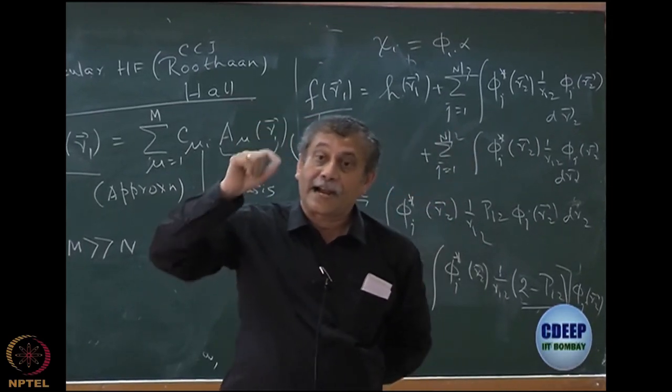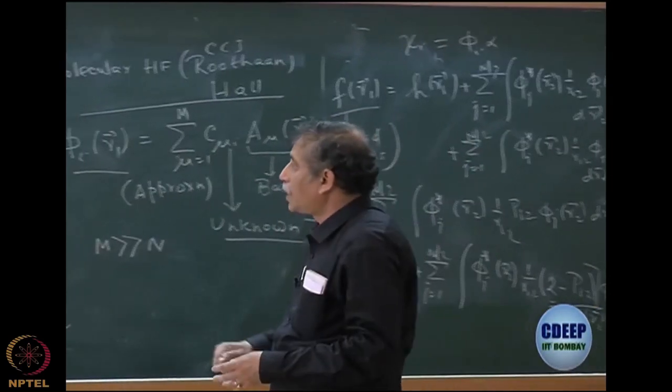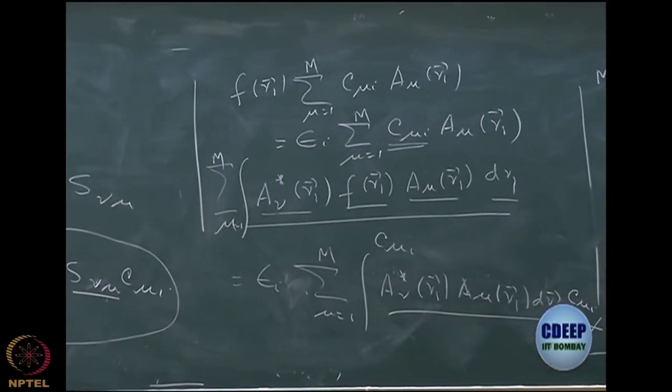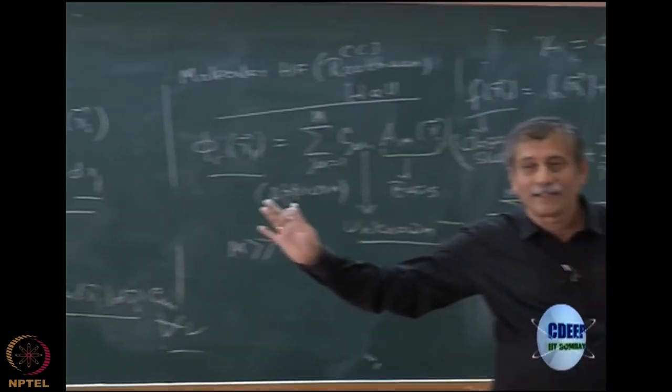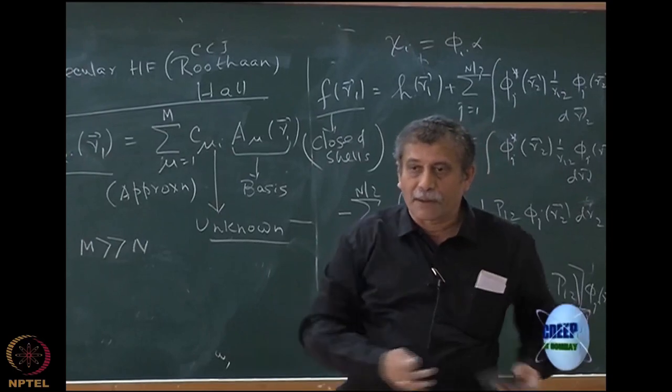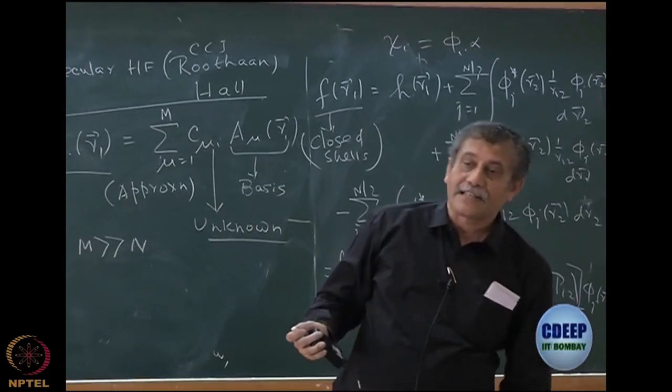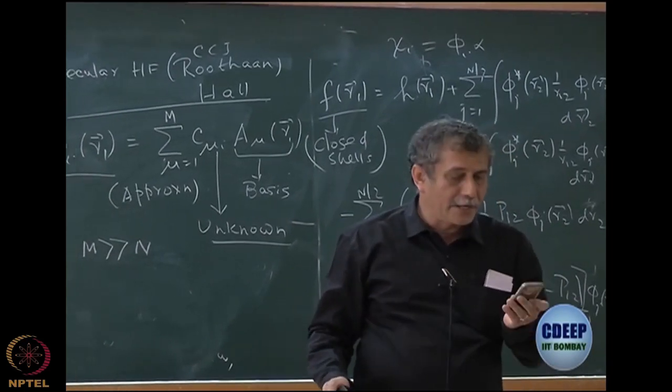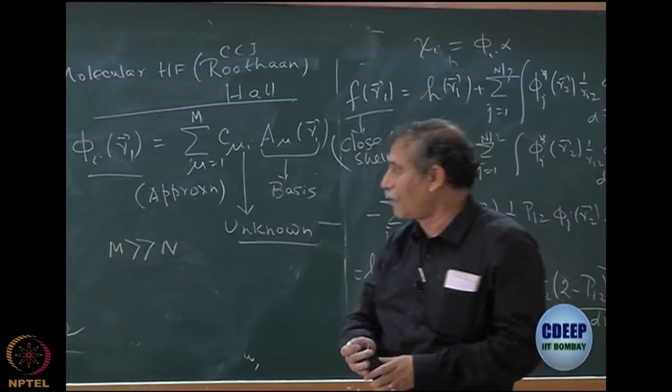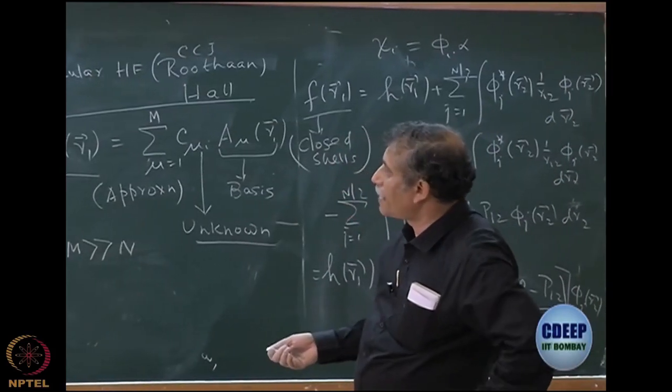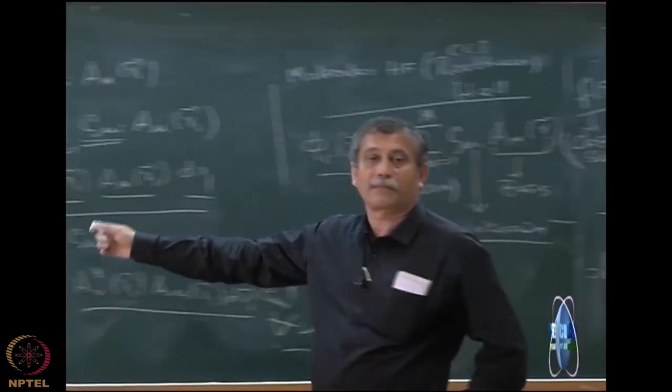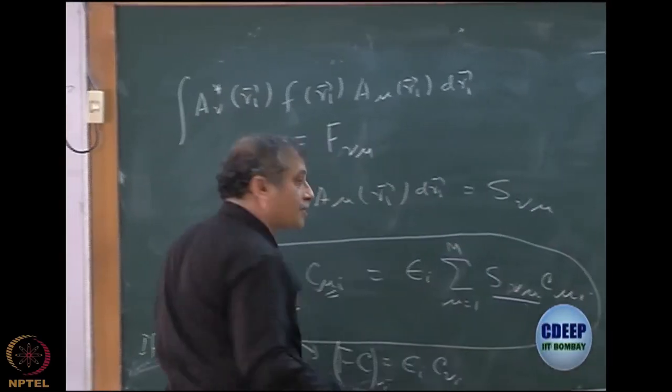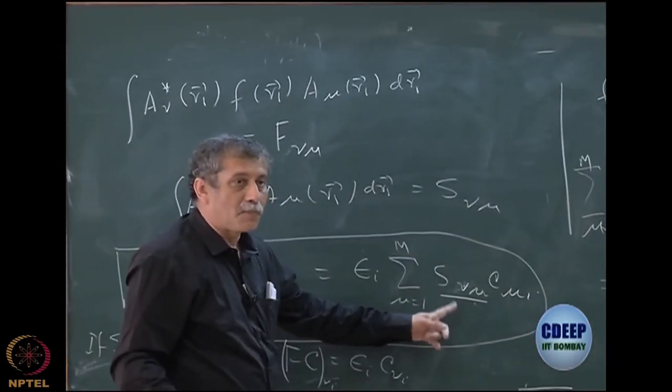So to take advantage of this chemistry, Roothaan deliberately said let us not make this orthonormal because a physicist would normally say, you know, forget about this, just make it orthonormal. Then it becomes very easy to do this problem. But obviously, the chemistry dictates that I need to take when I do LCAO picture, I need to take different sets of atomic orbitals from different atoms.